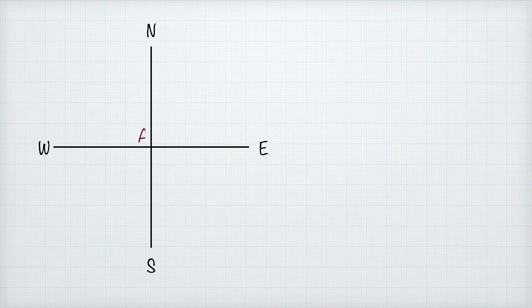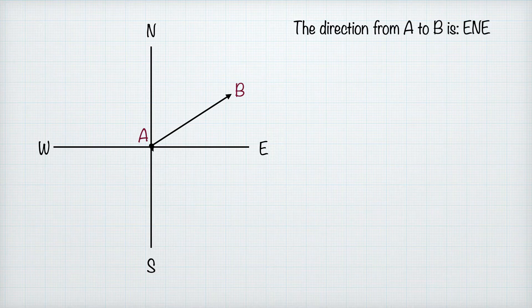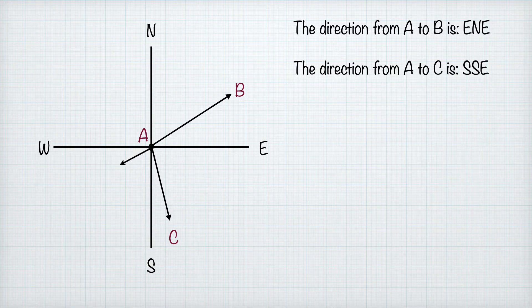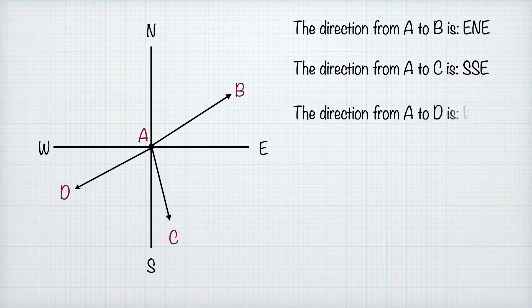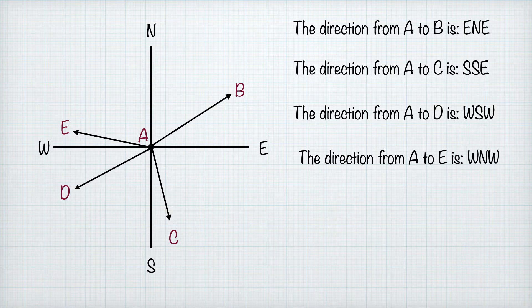There we have the cardinal points. Let's give direction starting at point A. The direction from A to B would be east-northeast. The direction from A to C would be south-southeast. The direction from A to D is closer to west, so we say west-southwest. And the direction to E is also closer to west but in the northwest quadrant, so it is west-northwest.